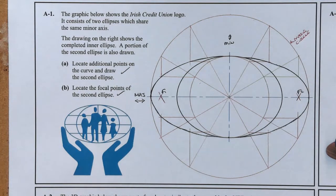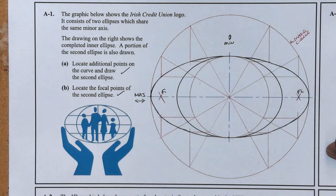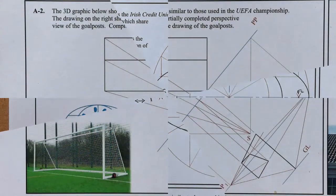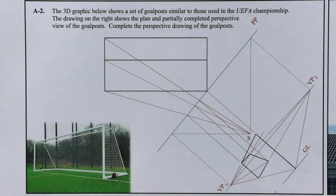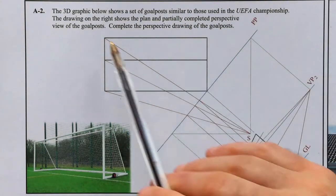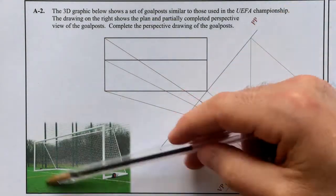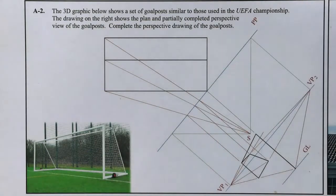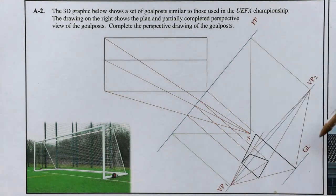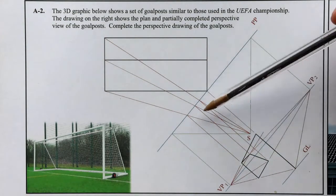Question A1 is done. Moving on to question A2, a perspective question. It says the 3D graphic shows a set of goal posts similar to those used in the UEFA championship. The drawing on the right shows the plan and a partially completed perspective view. We have the pitch plan, horizon line, vanishing points VP1 and VP2, and a ground line. The front section and back section of the goal posts are partially completed.